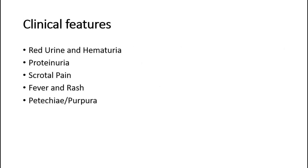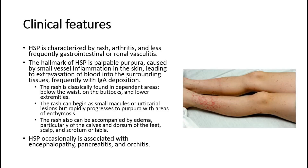Its clinical features include red urine and hematuria, proteinuria, scrotal pain, fever and rash, and petechiae or purpura. HSP is characterized by rash, arthritis, and less frequently, gastrointestinal or renal vasculitis.